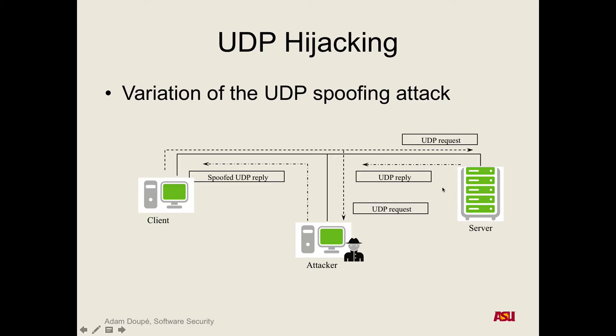If we're inside the local network, we can use ARP attacks to route all traffic from the client to its gateway through the attacker. Then we'll see all these packets, and when a UDP request comes in we can respond quickly — hopefully faster than the server — and get a spoofed UDP reply back. So should you be terrified? What critical network functionality uses UDP? DNS. When you type google.com into your browser, you want to go to Google's site, not an attacker's. This is part of the reason why HTTPS and all the things built on top of HTTP exist.